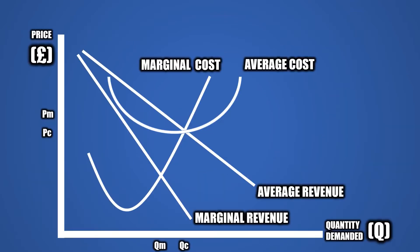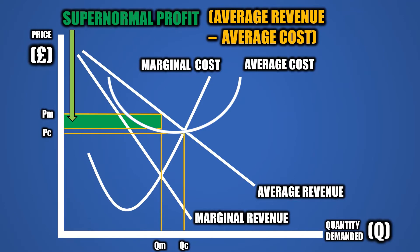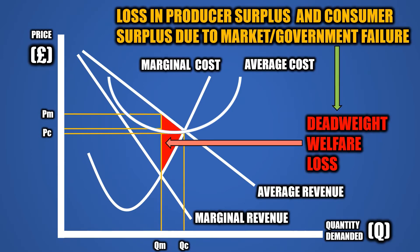These effects are displayed in this monopoly diagram, where the green area represents supernormal profit — the difference between the average revenue per unit of output and the average cost per unit of output at QM. The red area represents the deadweight welfare loss, which is the loss in consumer and producer surplus that originates from a market or government failure.